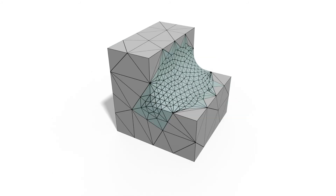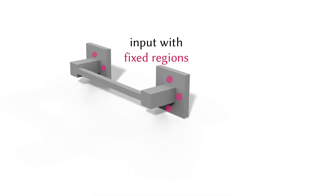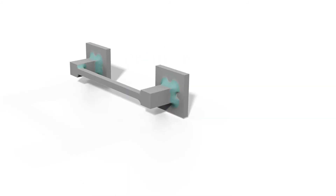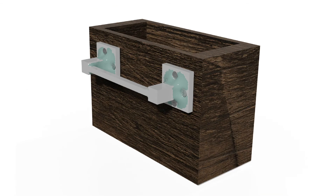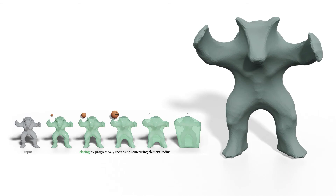Our local remesher ensures the presence of enough vertices around the regions that move, allowing our method to be used on very coarse inputs. Since every step of our flow amounts to a quadratic energy minimization, we can add fixed point and linear equality constraints — something that would be challenging to do in the traditional formulation. Like in the traditional formulation, we can reuse the closing by a smaller radius as a warm start for the closing by a bigger radius.